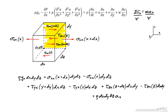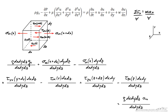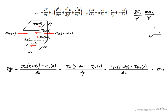Dividing by the volume of the differential element, dx, dy, and dz terms cancel out throughout. Continuing to simplify, I'm left with a compact expression, and in the limit of dx, dy, and dz approaching zero, this turns into differential form.